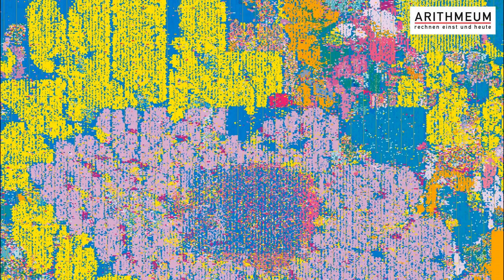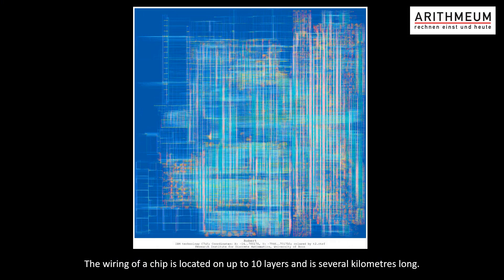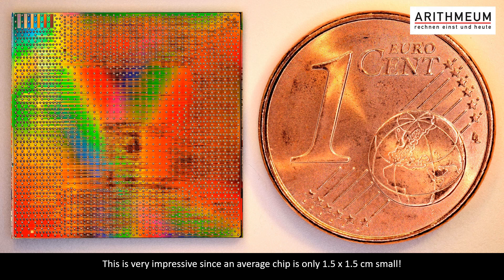If we zoom into the design picture of the placement of a chip, more and more rectangles become visible. They stand for groups of functional elements — the so-called circuits. If we wanted to print the design picture of a current placement such that every transistor was visible with the naked eye, the size of the print would be approximately 100 x 100 km. This should give us an idea of the complexity of the chip. A finished chip is only as big as a European 1 cent coin — extremely impressive given the high complexity of its components and wiring.